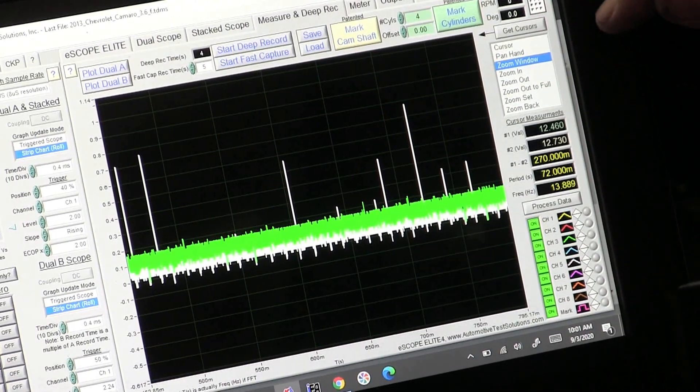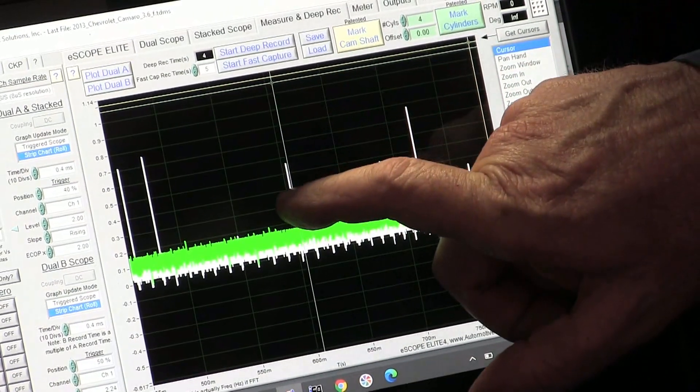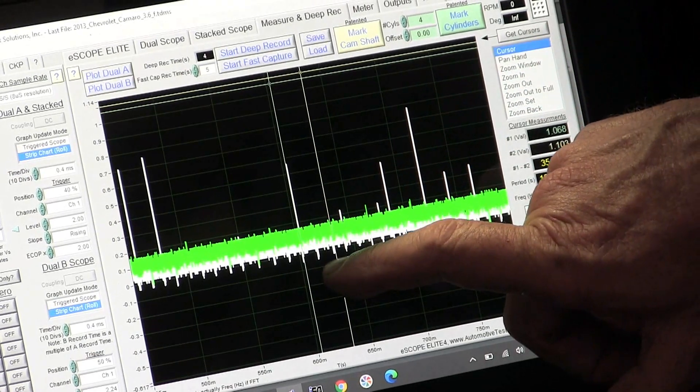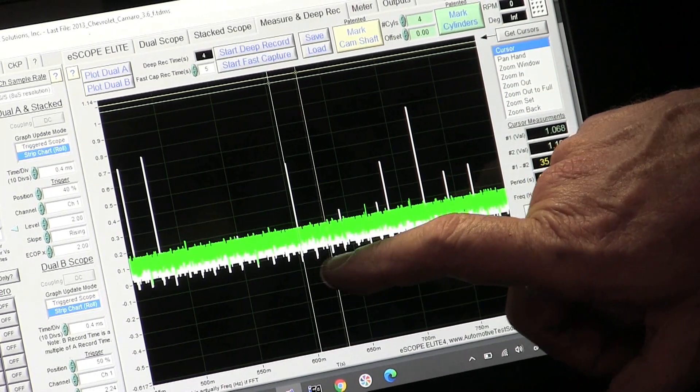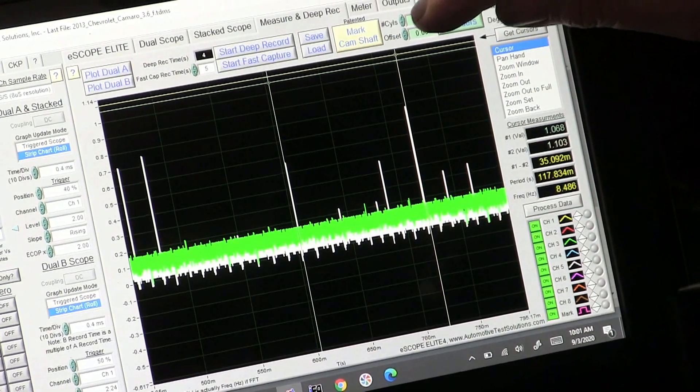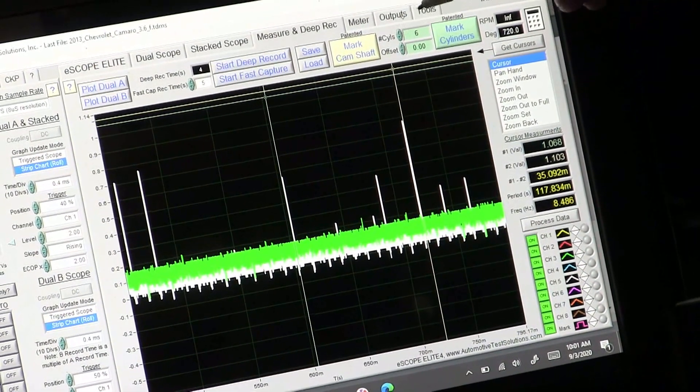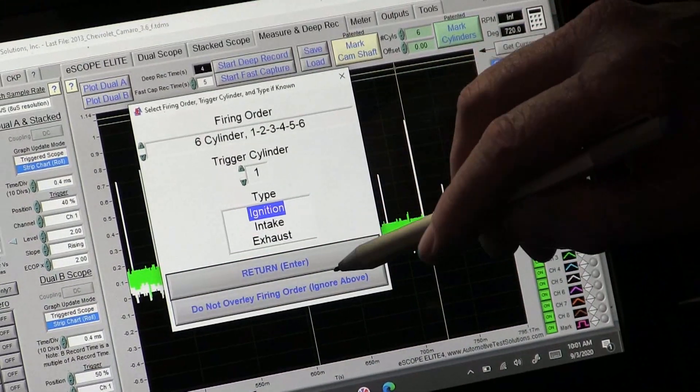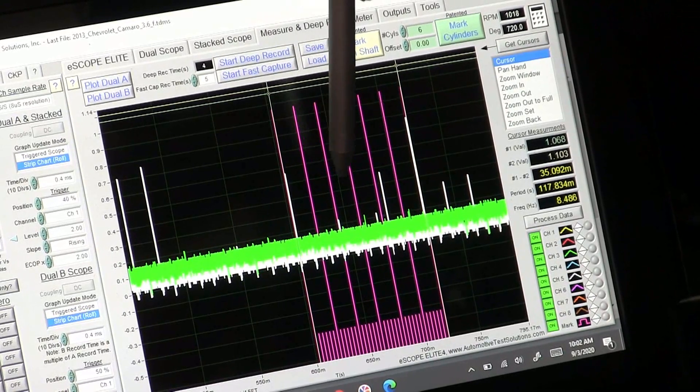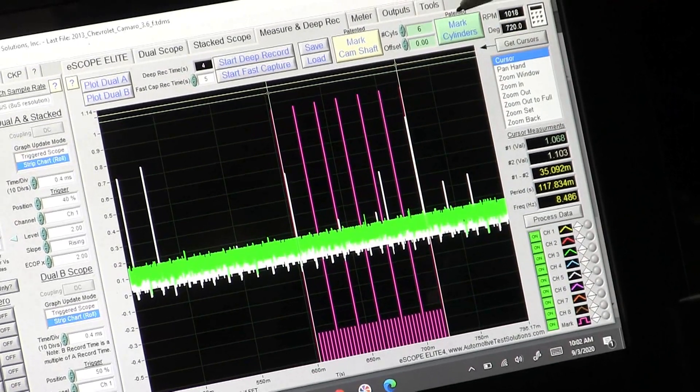So one thing I want to try is I want to go and I want to get cursors. I want to put that one there. I'm just trying to see if these spikes might be coming from the ignition if they align with it or not.